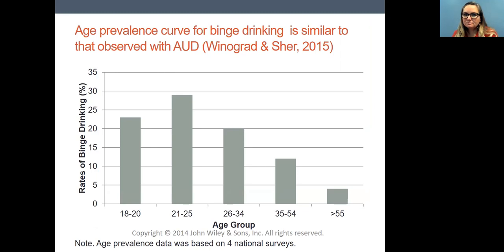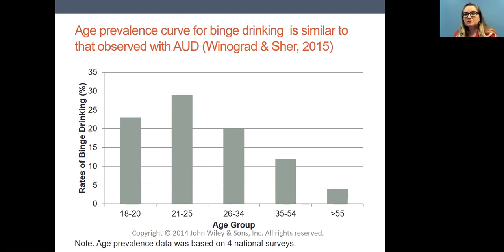Binge drinking or drinking to the level of intoxication is a problem of young people, just like all psychoactive drug use tends to be. If you look at the rates of binge drinking among 18- to 20-year-olds and 21- to 25-year-olds, you see the highest rates, and then it drops off with time. The rates of binge drinking can be anywhere from a little over 20% to almost 30% in those high-risk age groups. There are some people who don't drink at all, some who drink excessively to the point of intoxication, and then moderate drinkers in between.